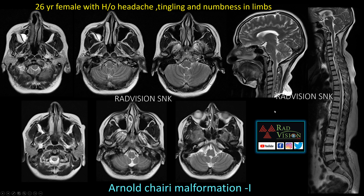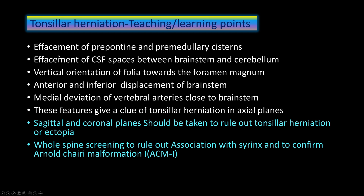Teaching points: features to suspect tonsillar herniation on axial planes include effacement of the pre-pontine or pre-medullary cisterns, effacement of the CSF space between the brainstem and cerebellum, vertical orientation of folia towards the foramen magnum (normally folia are horizontal and point away from foramen magnum), anterior inferior displacement of the brainstem, and medial deviation of the vertebral artery close to the brainstem.